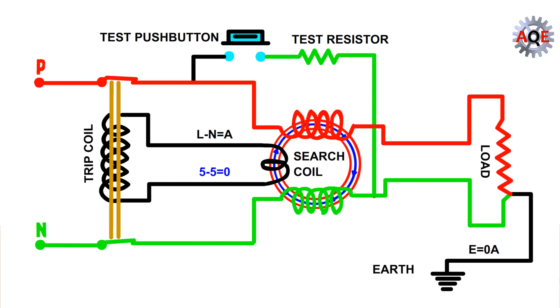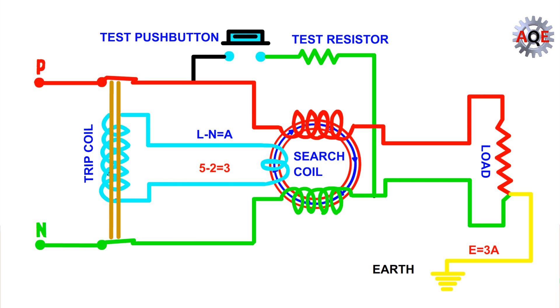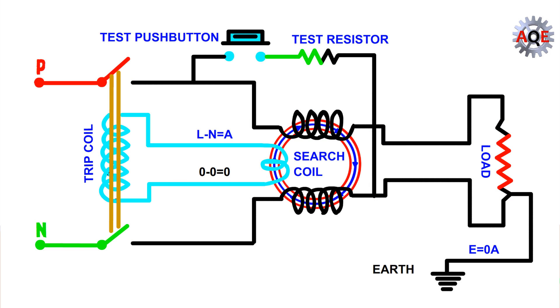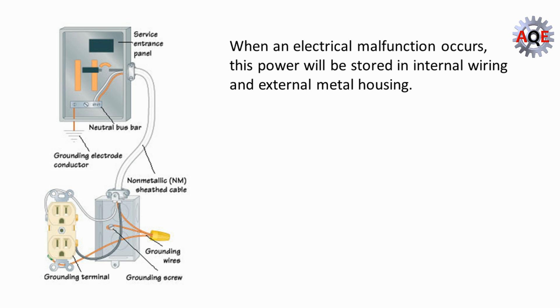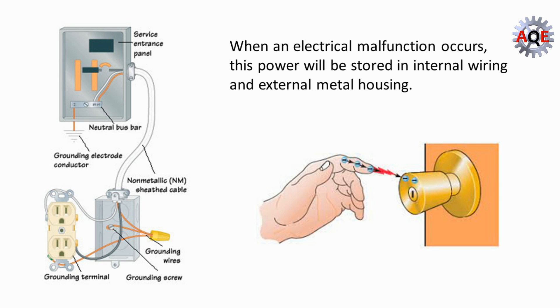If something goes wrong, there will be a buildup of energy. This can cause the electrical connection in housing to store that excess power. When an electrical malfunction occurs, this power will be stored in internal wiring and external metal housing. A static electric shock is a simple example.